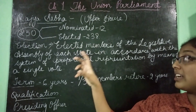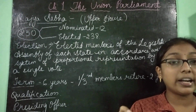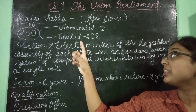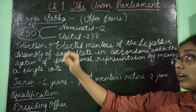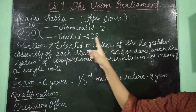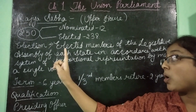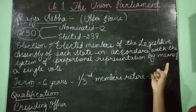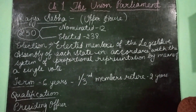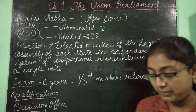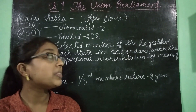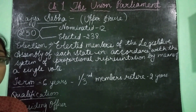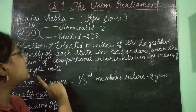The remaining 238 members are elected, and these members are elected indirectly. These members of Rajya Sabha are elected by the elected members of the legislative assembly of each state, in accordance with the system of proportional representation by means of a single transferable vote. They are elected indirectly because it is the MLAs — elected members of the legislative assembly — who elect them.